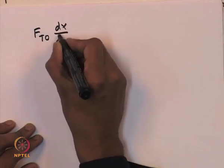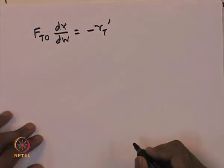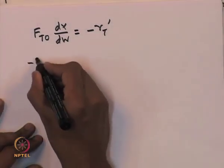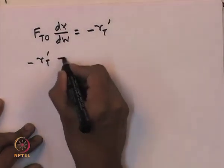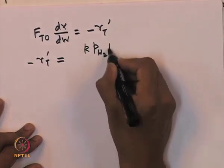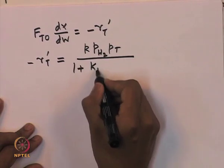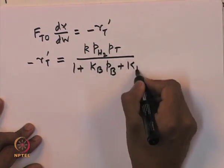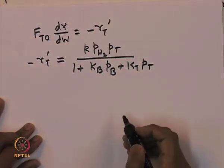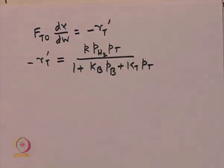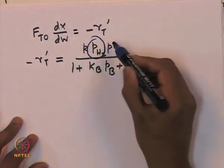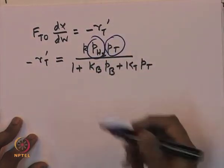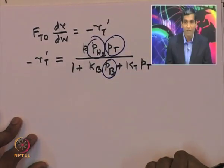The model equation relating conversion to catalyst weight is: FT0 · dx/dw = −r′T, where the rate is given by k multiplied by the partial pressure of hydrogen multiplied by the partial pressure of toluene, divided by 1 + KB·PB + KT·PT. To integrate this, we need the limits for w — the weight of the catalyst. We know the expressions for the partial pressures of hydrogen, toluene, and benzene in terms of conversion.